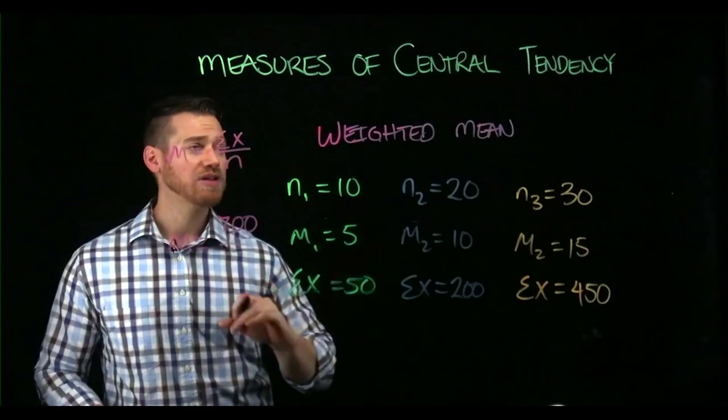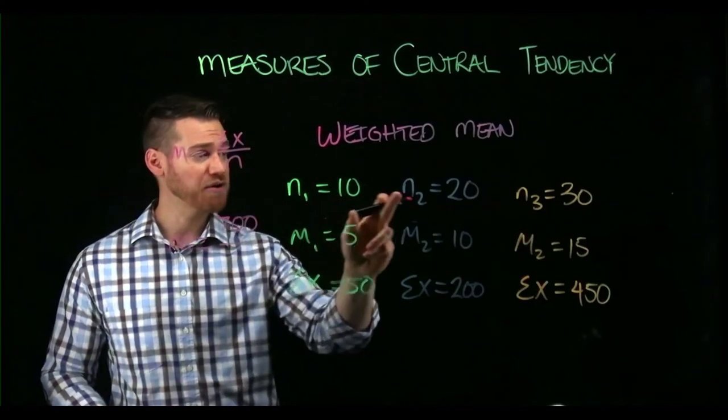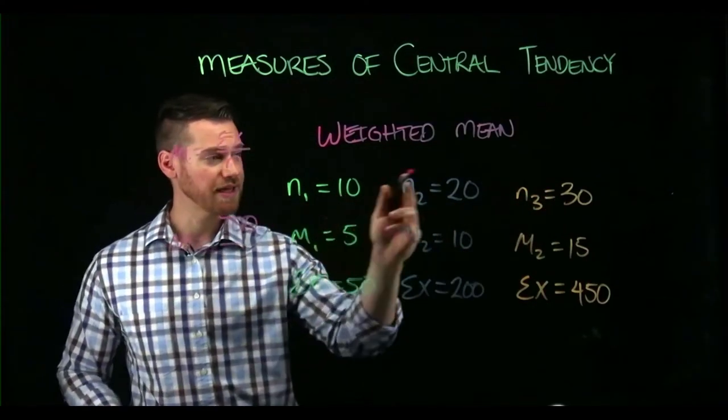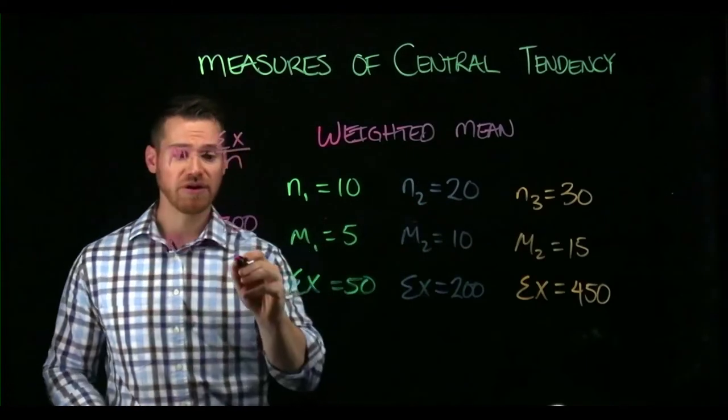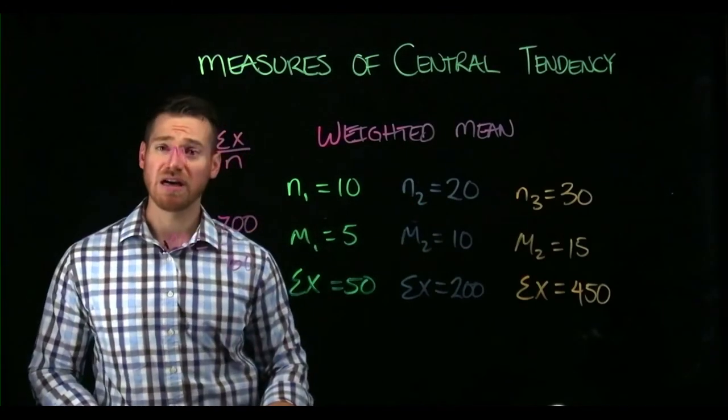What about the sample sizes? Well, we can aggregate those as well. So our sample sizes, 10, 20, and 30 together give us a total sample size of 60.